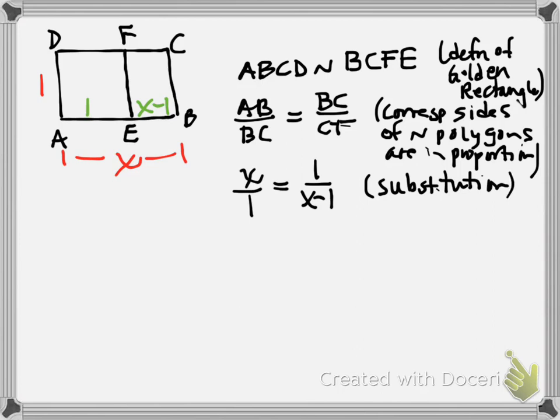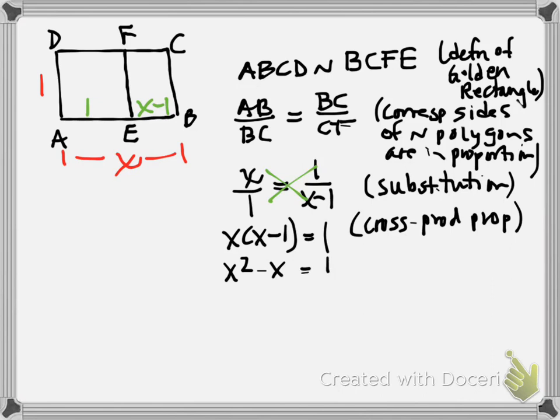All we can do is cross multiply. We're going to do cross products, and we're going to get X times the quantity X minus 1 is going to be equal to 1 times 1 or 1. That's just the cross product property. I can't really deal when I have parentheses, so I'm going to distribute, and I get X squared minus X equals 1. We need to get everything on one side, zero on the other. So I'm going to subtract 1 from both sides, and I get X squared minus X minus 1 equals 0.